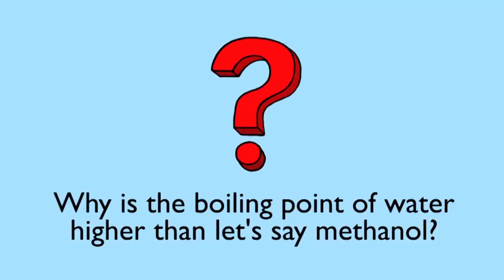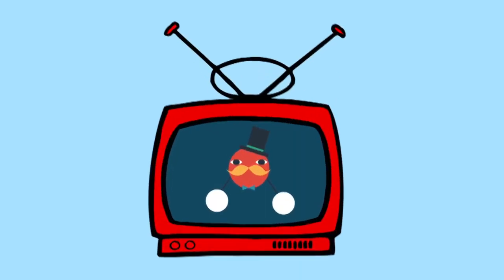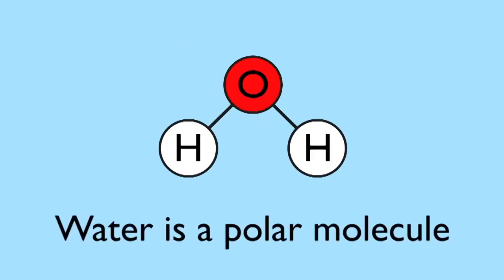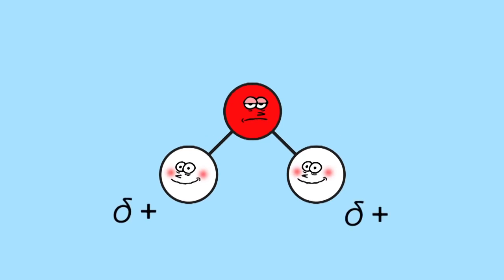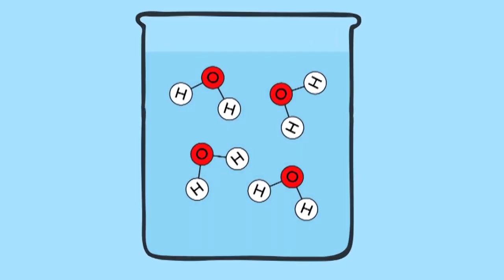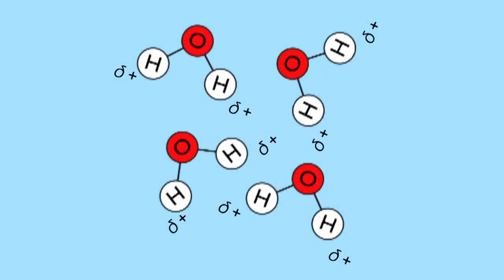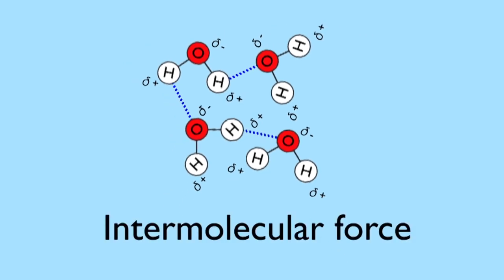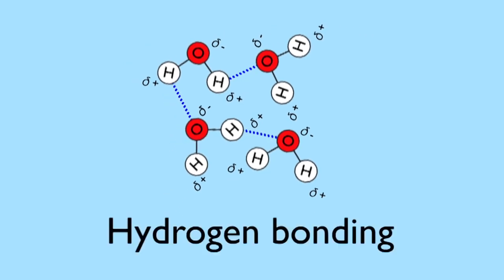But have you ever wondered why the boiling point of water is higher than, for example, methanol? Well, you might know from this video that water is a polar molecule with slightly positively charged hydrogens and slightly negative oxygens. Imagine a bunch of water molecules in a beaker. They are in liquid form so can move around each other. But the delta positive hydrogens from one molecule are weakly attracted to the delta negative oxygen of another. This is a type of intermolecular force and it has a special name, hydrogen bonding.